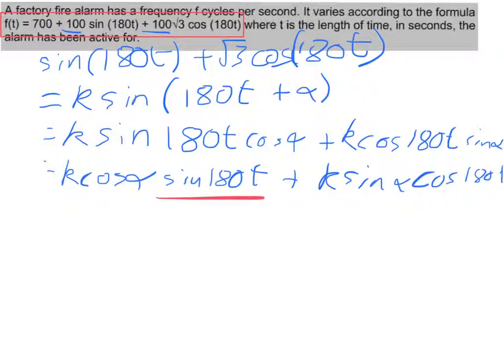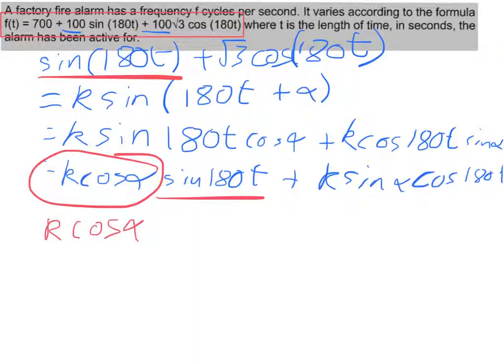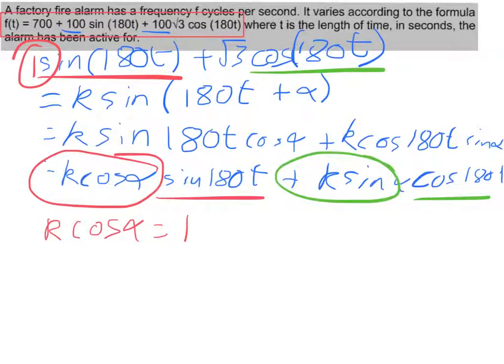Now sine 180t, sine 180t, I'm going to compare the coefficients, what they've been multiplied by. So I know k cos alpha is equal to 1. I've got 1 in front of my sine, I've got 1 lot of sine 180t there. Do exactly the same with cos 180t. So it means positive k sin alpha is equal to positive root 3. So I've got my two building blocks which are vital for putting the whole thing together.